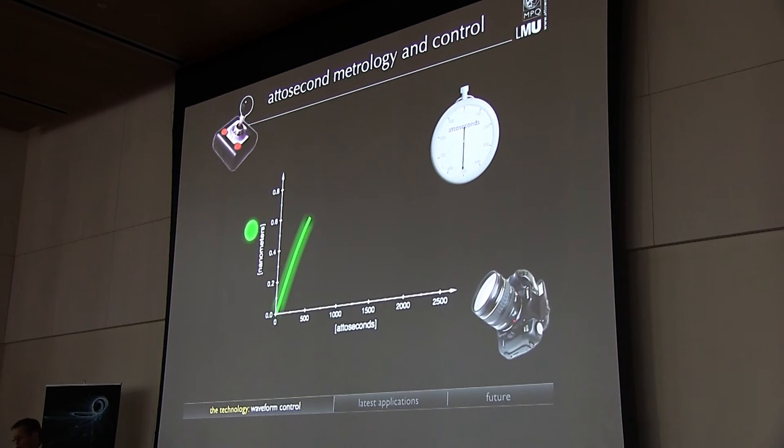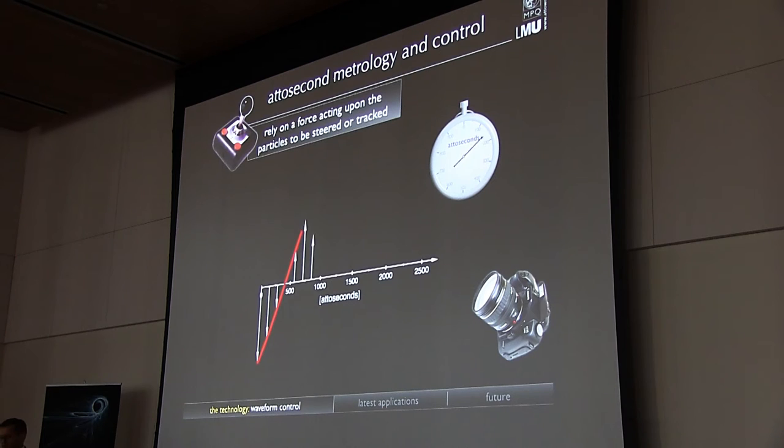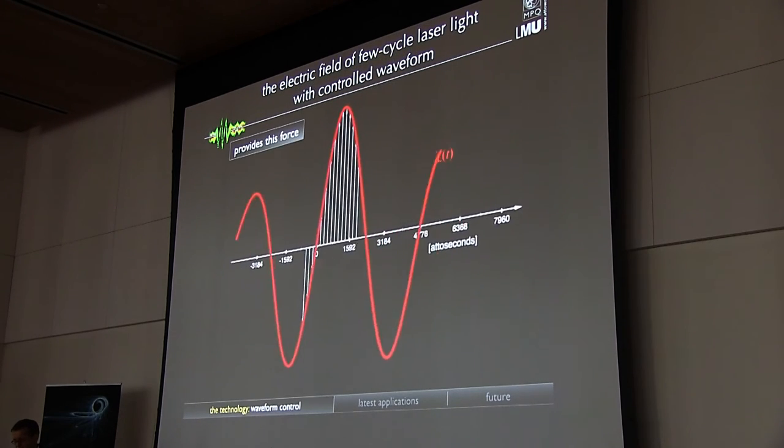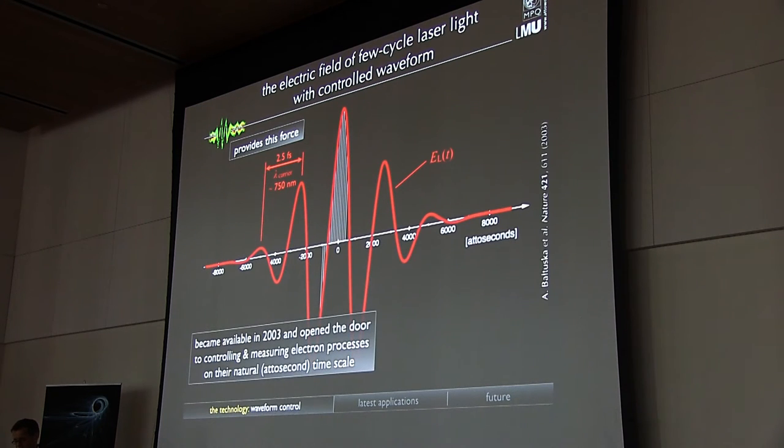Attosecond methodology and control are intertwined, both requiring a force that is variable in a controlled fashion on the relevant time scale. The relevant time scale is the natural time scale of electronic motion. This is the attosecond time scale. So, the electric force of light is obviously capable of providing us with this force, but only if its temporal evolution is well controlled. What we need for providing this force is a laser pulse with a controlled temporal evolution of its electric field. Such laser pulses have become available quite some time ago, back in 2003, and opened the door to both controlling and measuring electron processes on the natural time scale.